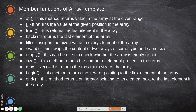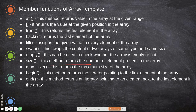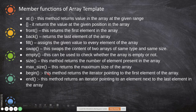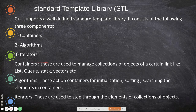For swap, both arrays must be of the same type — both integer or both string — and must also be the same size. For example, if array one has five values, array two must also have five values. 'empty()' checks whether the array is empty and returns a boolean. 'size()' returns the number of elements present. 'max_size()' returns the maximum size. 'begin()' returns an iterator pointing to the first element, and 'end()' is used with iterators to traverse the whole container.